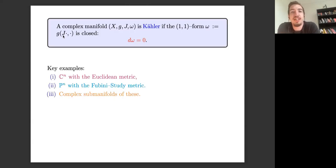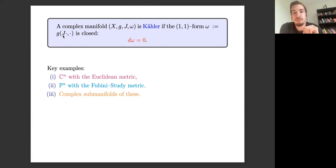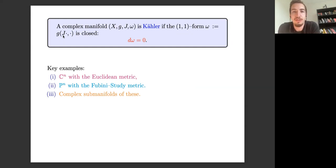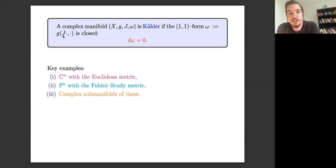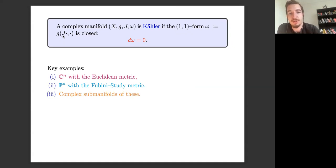A Hermitian manifold is specified by the following data: a Riemannian metric G with a complex structure J and a (1,1)-form omega. It's Kähler if this (1,1)-form is closed, in the sense that it lies in the kernel of the exterior derivative. The key examples are the Euclidean metric on ℂⁿ, the Fubini-Study metric on ℙⁿ, and since restricting to complex submanifolds preserves the Kähler condition, complex submanifolds — for instance Stein manifolds in the case of Euclidean space and projective manifolds in the case of ℙⁿ — both yield examples of Kähler manifolds.